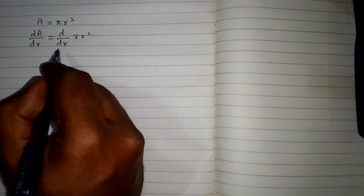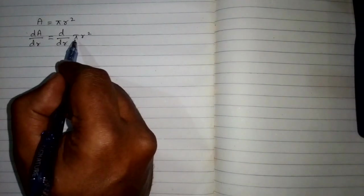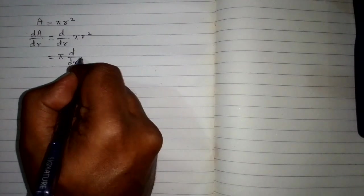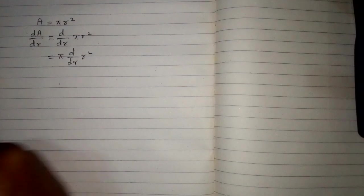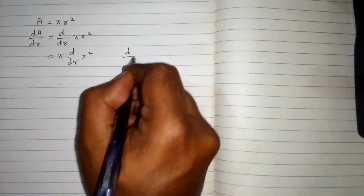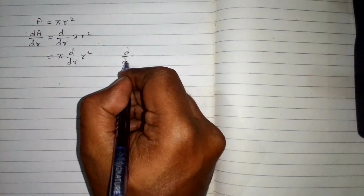We'll take the derivative of pi r square with respect to r. Pi is the coefficient of r square, so first we will write pi, then d/dr of r square. Now we know that the power rule of differentiation is d/dx of x to the power n is equal to n times x to the power n minus 1.